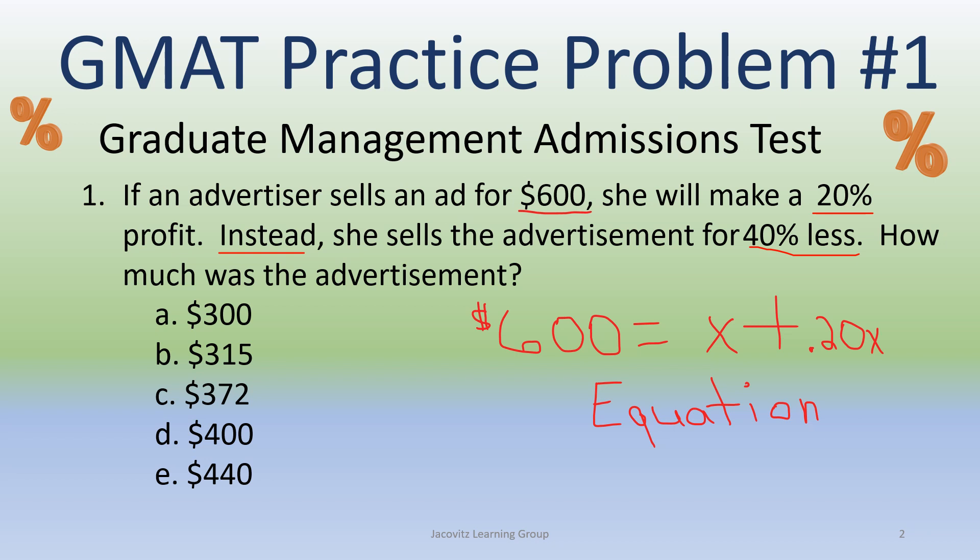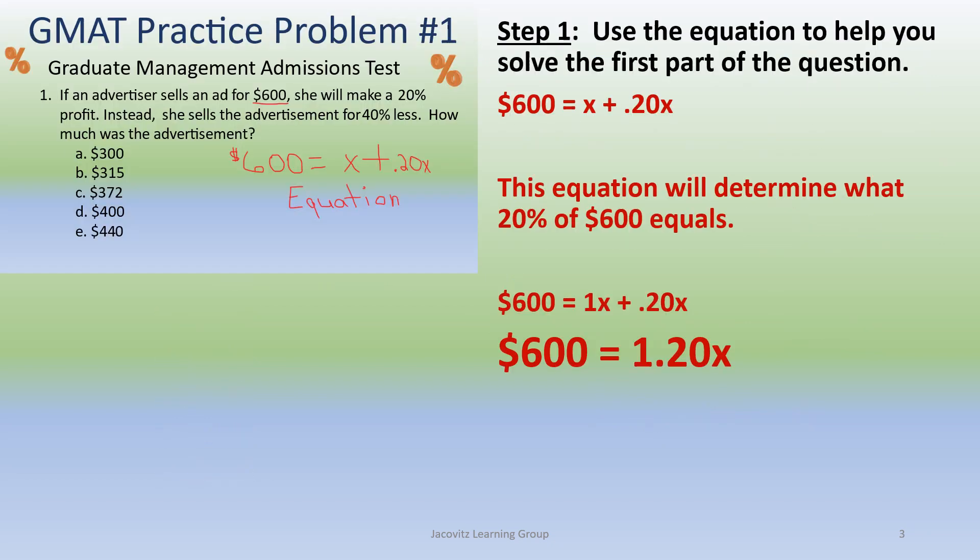When we start, I went ahead and wrote the equation on this page. The GMAT test advisors advise that you set it up as $600 = x + 0.20x. And remember, this is 1x. So just think about that as we move on. You have 600 equals x plus 0.20x.